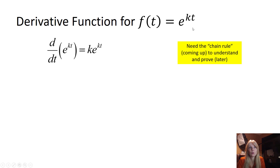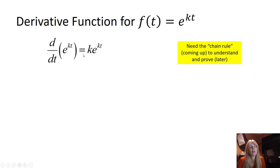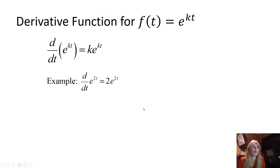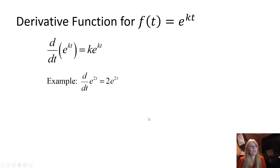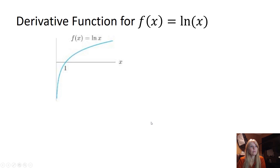For a function e^(kt), where k is a constant, we again need the chain rule to prove it, but the rule is: the k comes down front, and e^(kt) stays the same. For example, the derivative of e^(2t) is 2e^(2t).